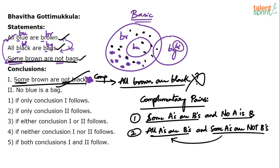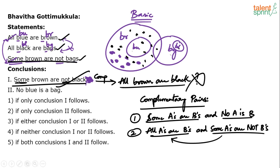This is reverse engineering. It's not convenient to verify the first conclusion directly, so we take the converse and verify. We found it cannot be tails, therefore it has to be heads. All browns being black is not allowed, so all browns being black is false, which means some brown are not black has to be true. Conclusion number one is true.